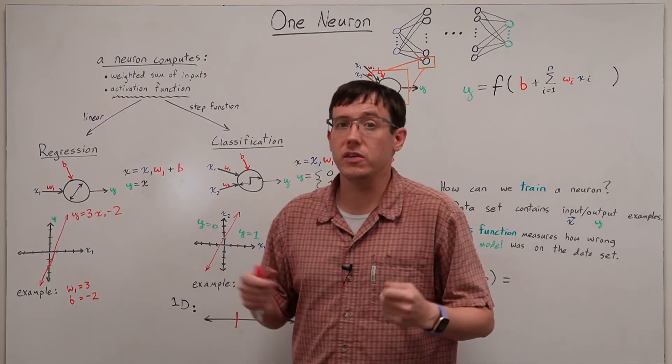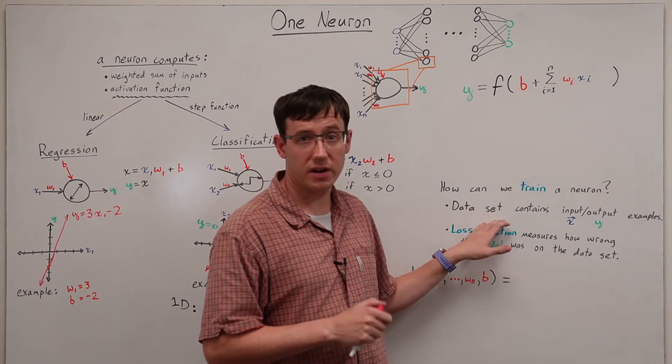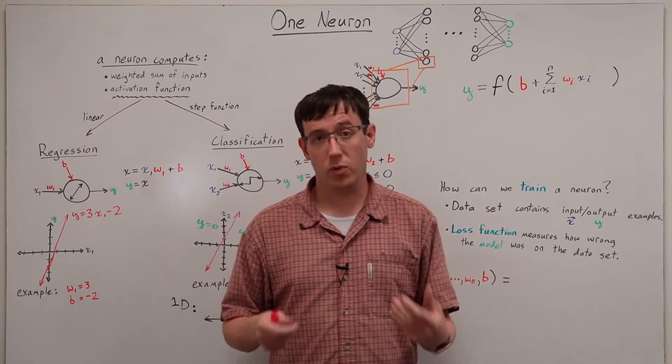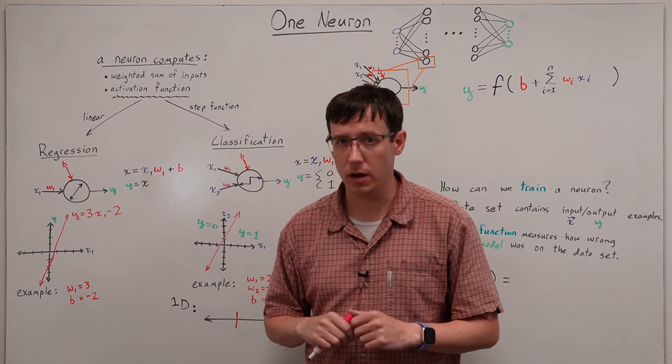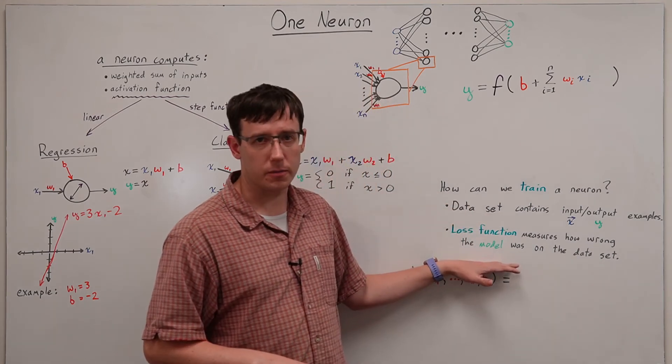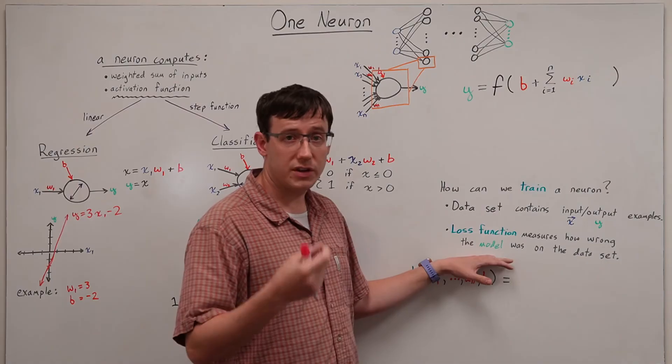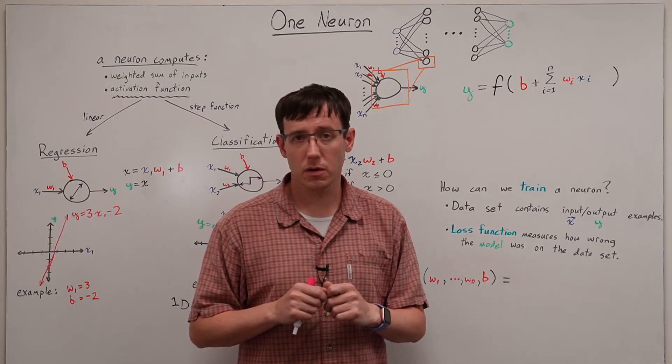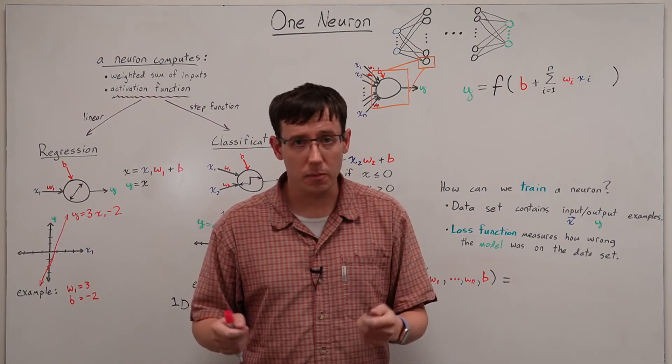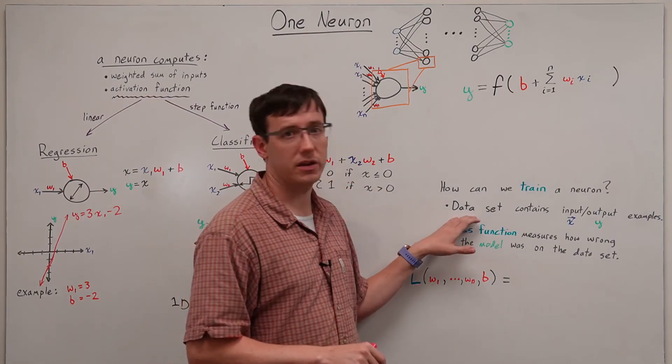The process of picking these parameters to best represent a data set is called training. And to train a neural network or a single neuron, we need to define a loss function. The job of the loss function is to tell us, for the current values of the parameters, how wrong is the model in terms of representing the data.